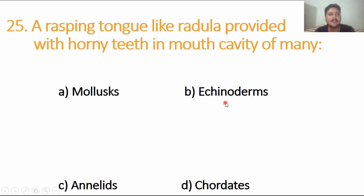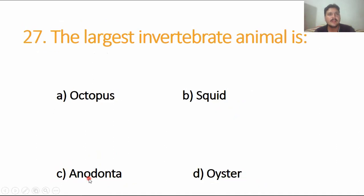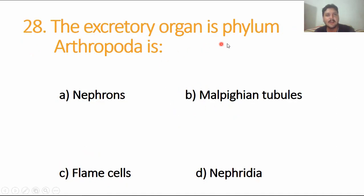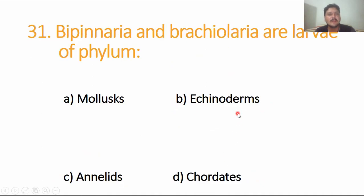A rasping tongue-like radula provided with horny teeth in mouth cavity of many molluscs. In Mollusca, blue color respiratory pigment is hemocyanin. Option C is the right answer. The largest invertebrate animal is giant squid. The excretory organ in phylum Arthropoda is Malpighian tubules. Hepatitis and cholera is spread by house fly. The phylum which is exclusively marine is Echinodermata, only in marine water. Bipinnaria is also echinoderm.